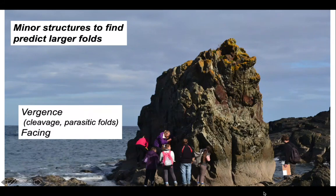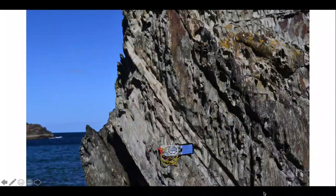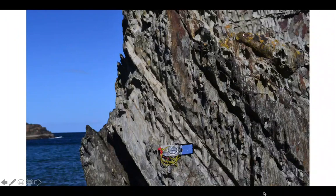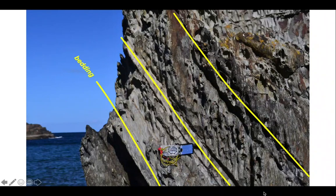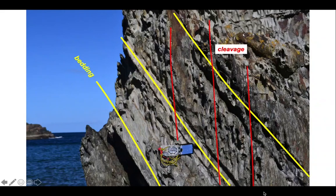Let's set the problem up, seeing what these guys are looking at on the outcrop. We can identify a number of features. First, here's the bedding and running across the outcrop is a shape fabric, the cleavage, which is oriented more or less vertical and has an asymmetric relationship to bedding.